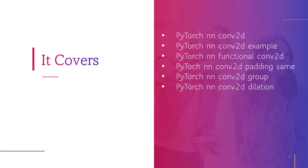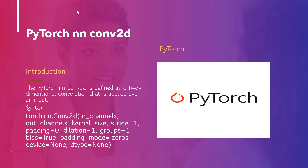The following are the topics that we are going to discuss. Firstly, we will understand about PyTorch NN Conv2D, and after that we will discuss about a PyTorch NN Conv2D example. Then we will understand about PyTorch NN Functional Conv2D, PyTorch NN Conv2D padding same, PyTorch NN Conv2D group, and finally PyTorch NN Conv2D dilation. So without any delay, let's jump to the topic.